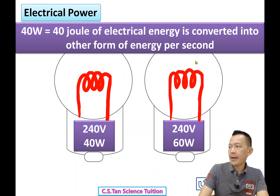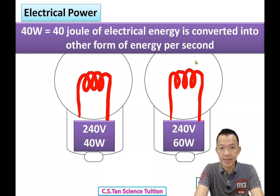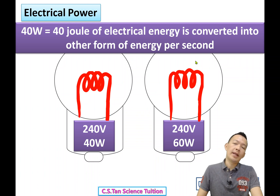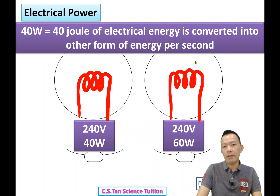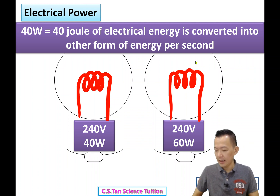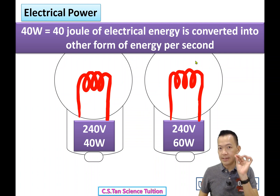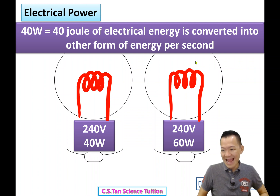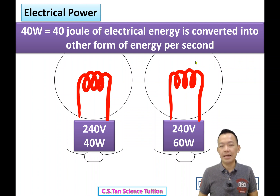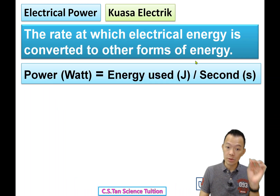Another example: buying a vacuum cleaner. One is 800 watts at RM150, another is 2000 watts at RM450. The 800-watt one is quieter, but when there's a rubber band on the floor, you have to pick it up yourself. The 2000-watt one uses 2000 joules per second, so it sucks up everything. That is power.